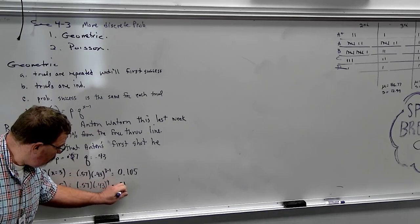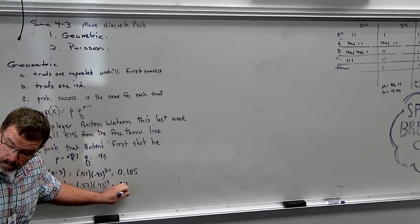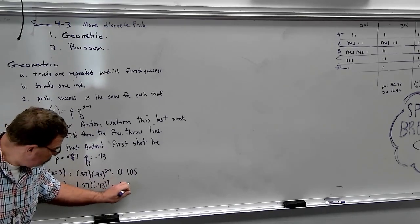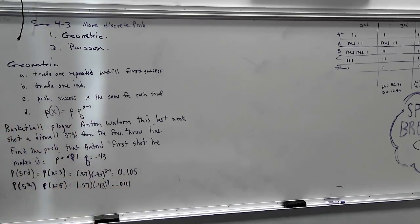So look what happens if you calculate x equals four or five. It would be 0.57, 0.43 to the fourth. Five minus one. What do you got? 0.01. There you go. So there's only technically a 1.11% chance of that happening. He is not going to miss four free throws in a row. He should have made one by now, even with his bad shooting record.